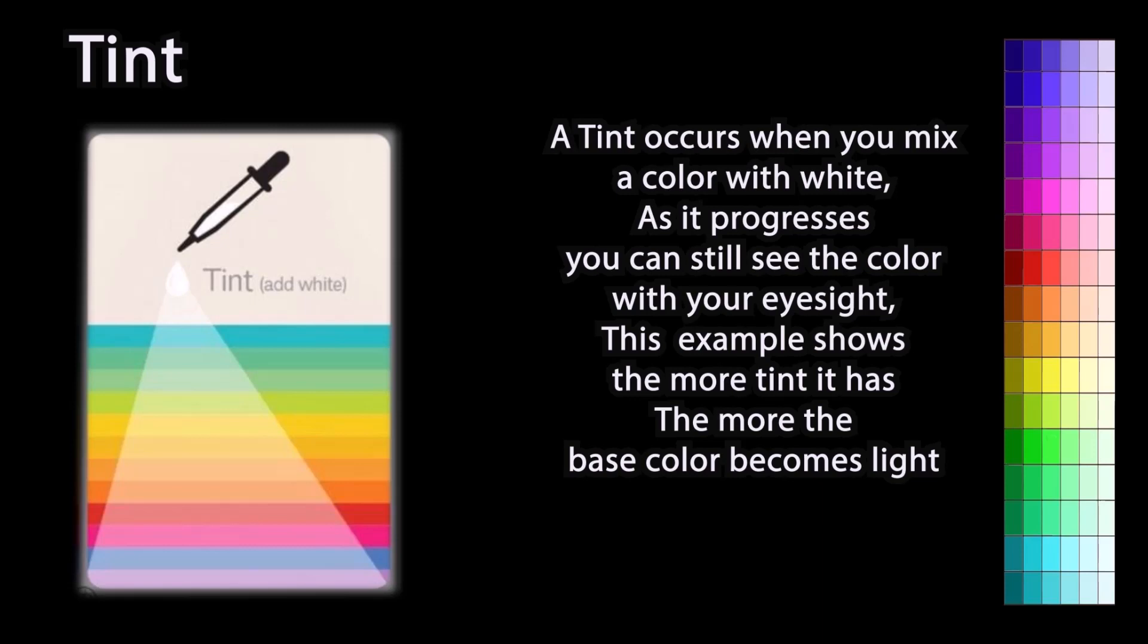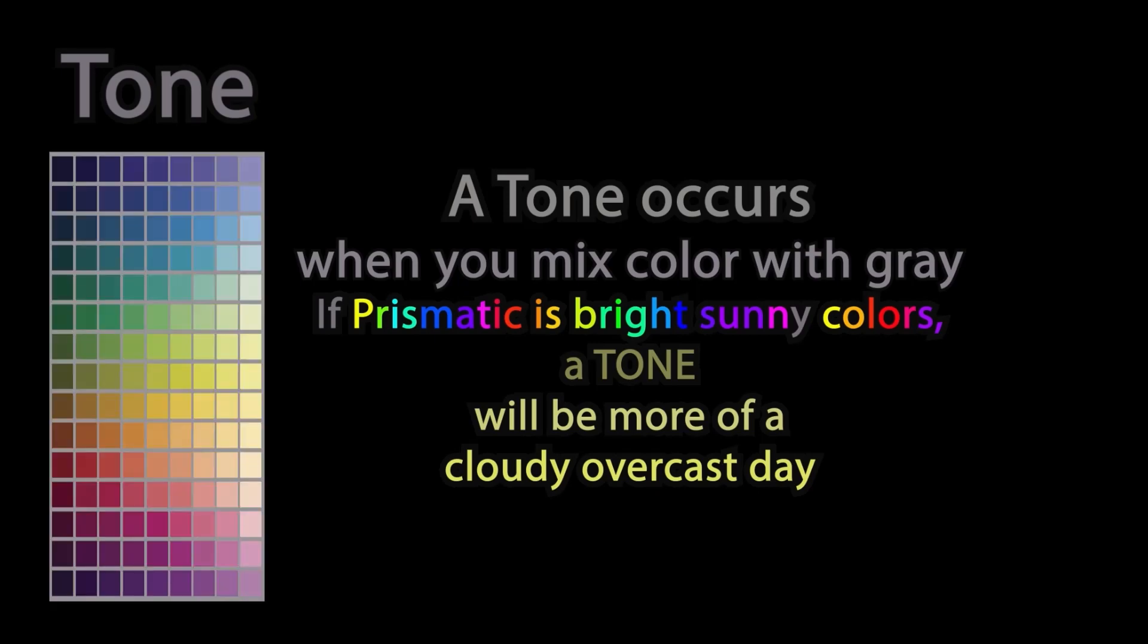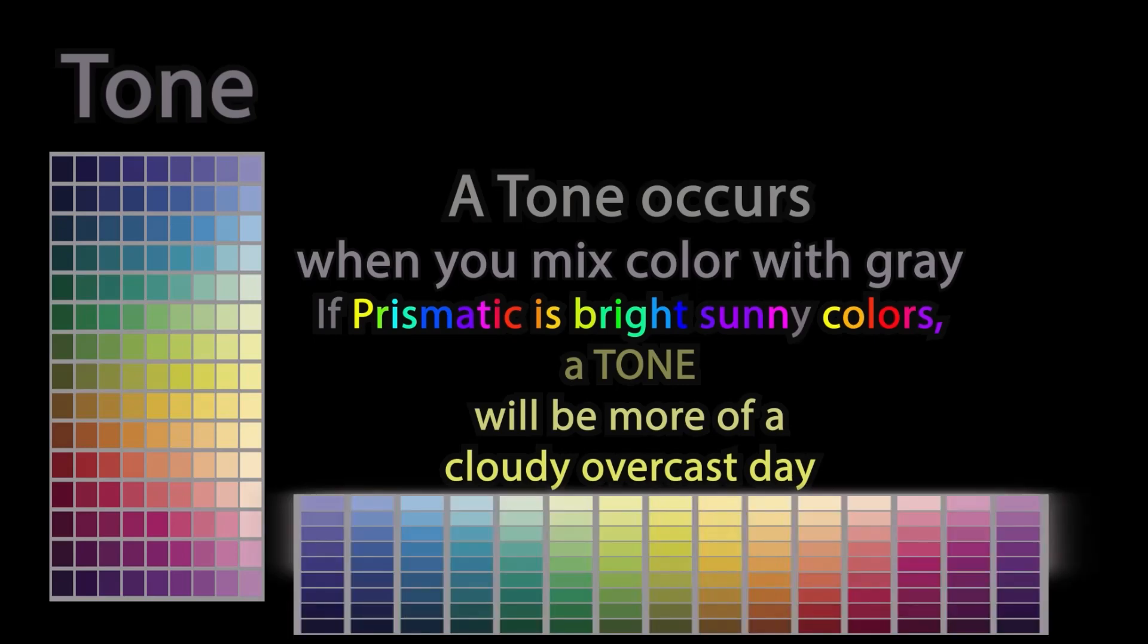This example shows the more tint it has, the more the base color becomes light. Tone. A tone occurs when you mix a color with gray. If prismatic is bright and sunny colors, a tone will be more of a cloudy overcast day.